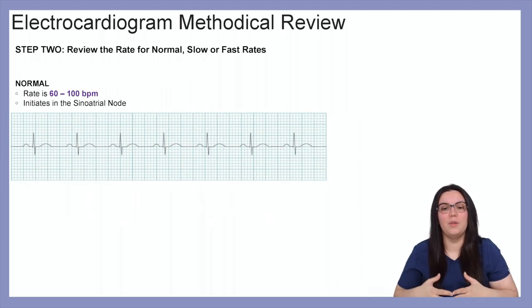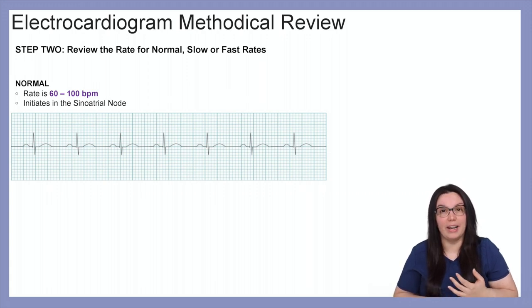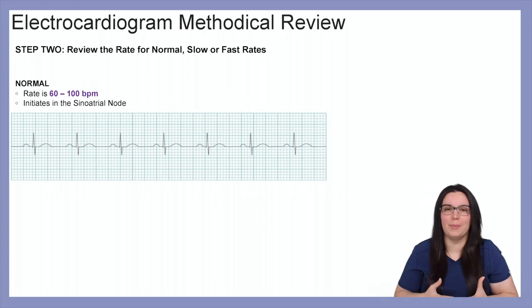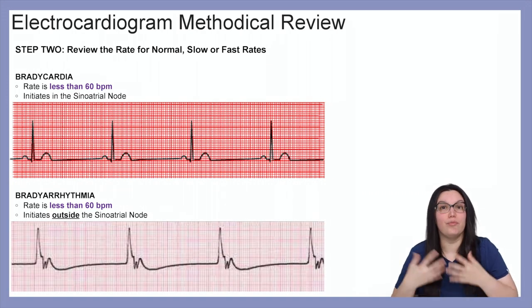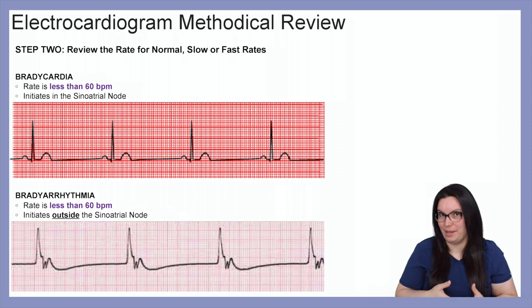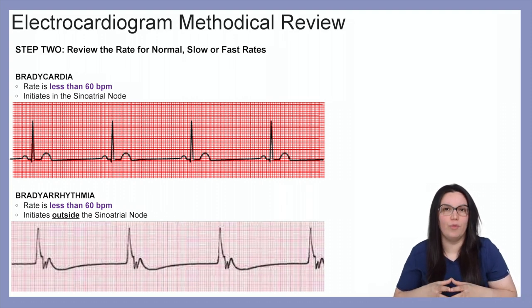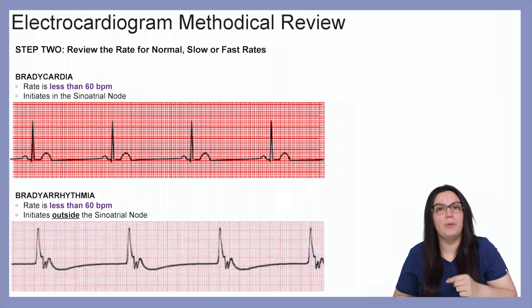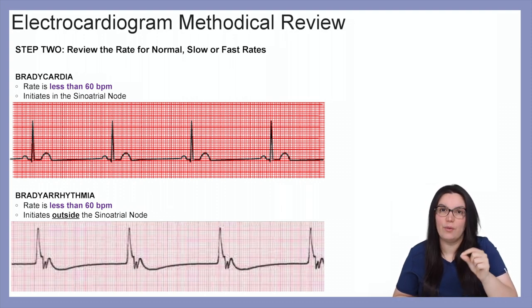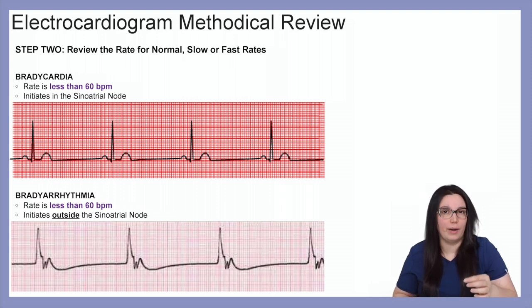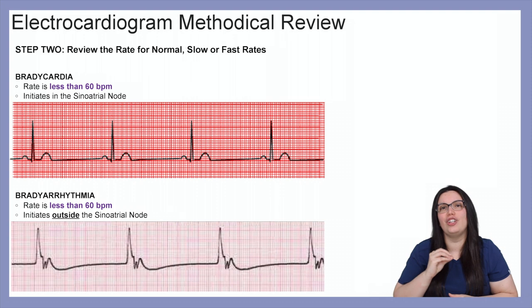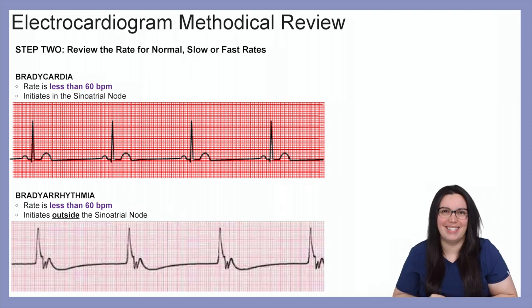Step two: review the rate for normal, slow, or fast rates. A normal rate is between 60 to 100 beats per minute, initiated in the sinoatrial node. Bradycardias have a rate of less than 60 beats per minute and are initiated in the sinoatrial node, whereas bradyarrhythmias also have a rate of less than 60 beats per minute but are initiated outside of the sinoatrial node.